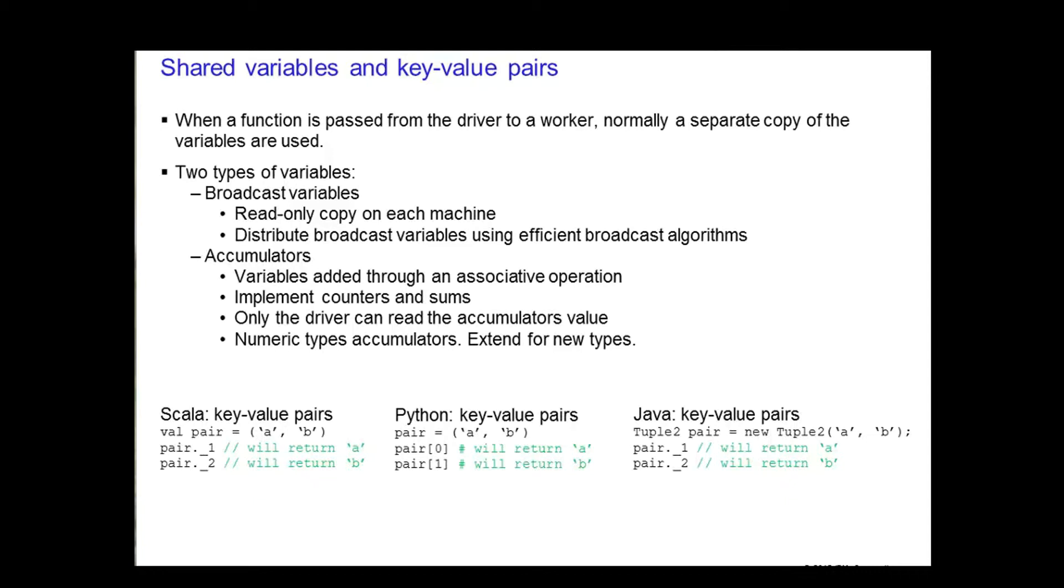To access each element, invoke the dot underscore notation. This is not zero indexed, so the dot underscore 1 will return the value in the first index and dot underscore 2 will return the value in the second index.